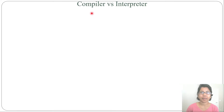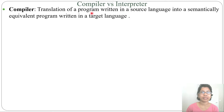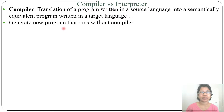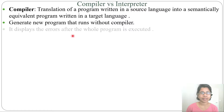Let's discuss compiler versus interpreter. A compiler is a translation of a program written in source language into a semantically equivalent program written in target language — basically converting into assembly language to generate a new program. After compiling, we generate relocatable code that will run without the compiler. It displays errors after the whole program is executed — it reads all lines first, then displays the error.